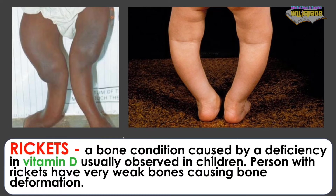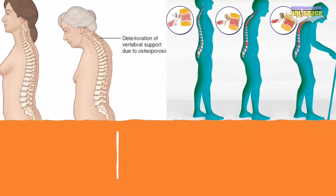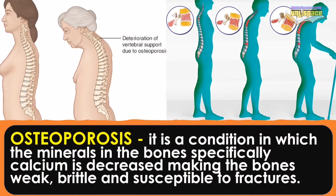Rickets is a bone condition caused by a deficiency in vitamin D, usually observed in children. A person with rickets has very weak bones, causing bone deformation. Osteoporosis is a condition in which the minerals in the bones, specifically calcium, are decreased, making the bones weak, brittle, and susceptible to fractures.